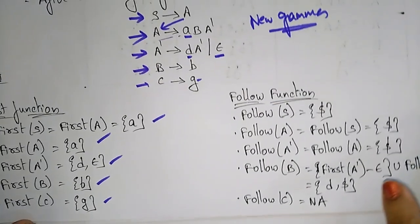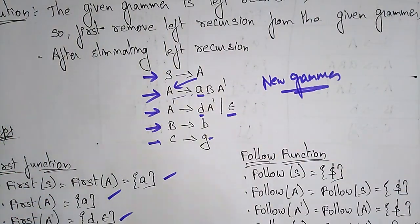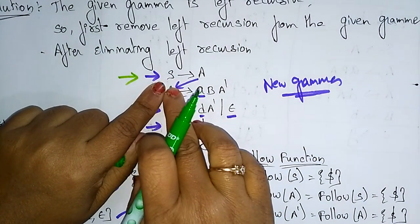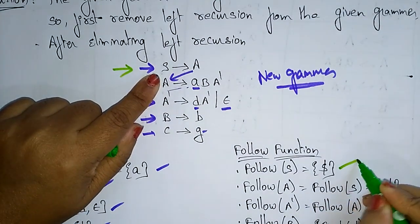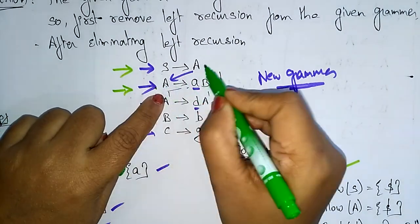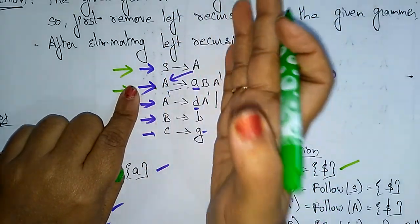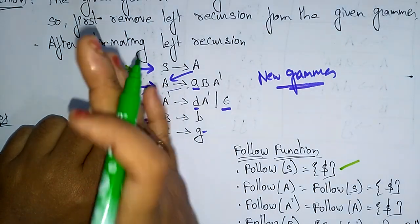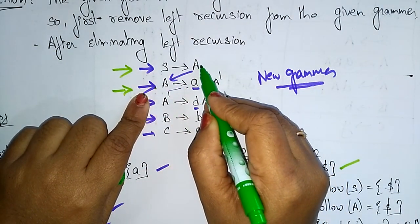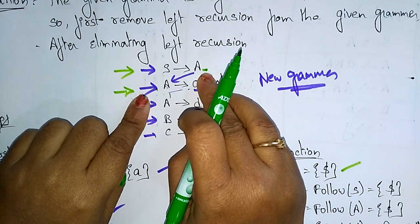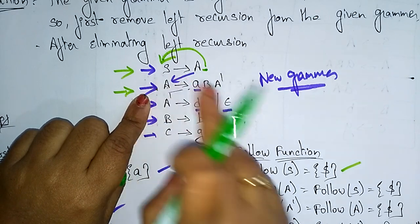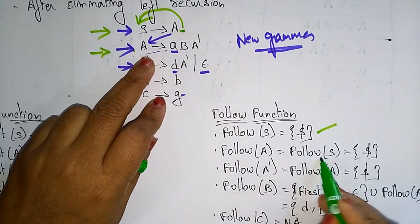Now let's calculate the FOLLOW function. FOLLOW(S): since S is the start symbol, FOLLOW(S) = {$}. For FOLLOW(A): we check where A appears on the right-hand side. In the production S → A, there is no element after A, so we shift to the left-hand side: FOLLOW(A) = FOLLOW(S) = {$}.